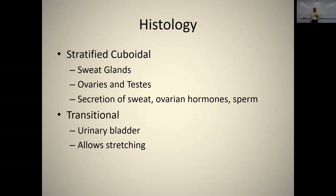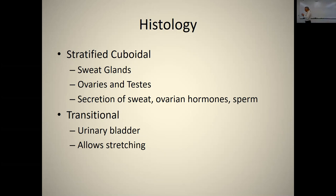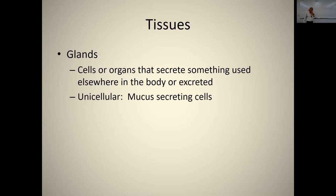Stratified cuboidal tissue is found in sweat glands, ovaries, and testes, and is responsible for secretion of sweat, ovarian hormones, and sperm. Transitional epithelium in the urinary bladder allows stretching — stratified when empty, simple when full. Stratified columnar is extremely rare, possibly found in part of the male urethra, and we won't focus on it.